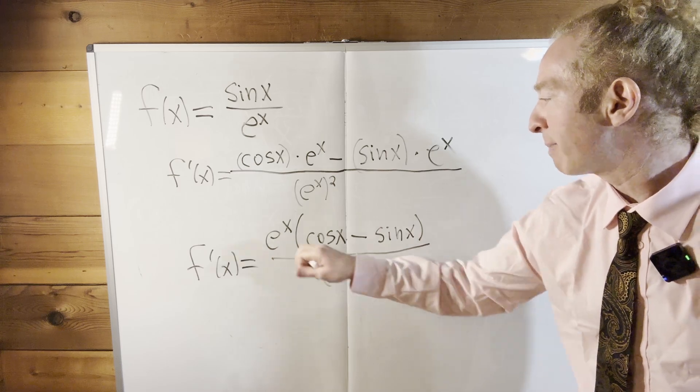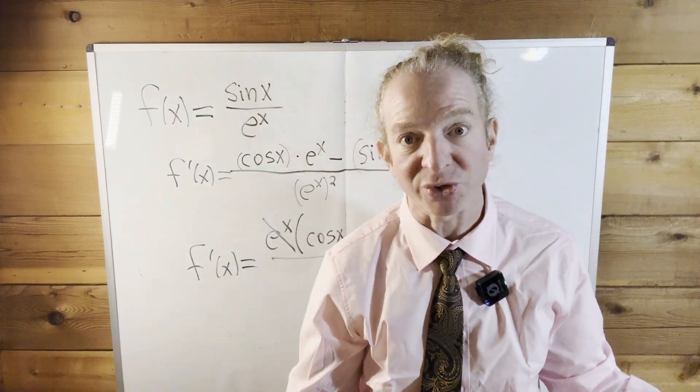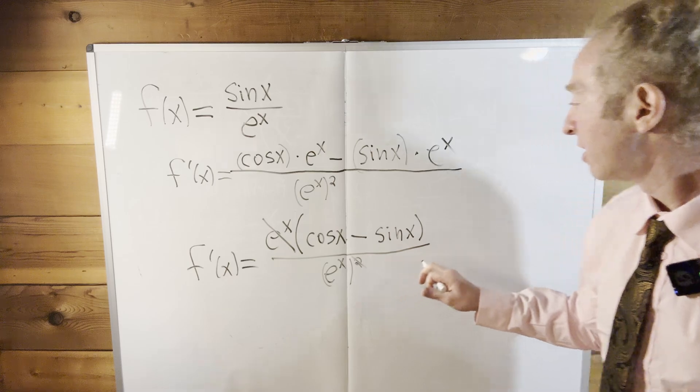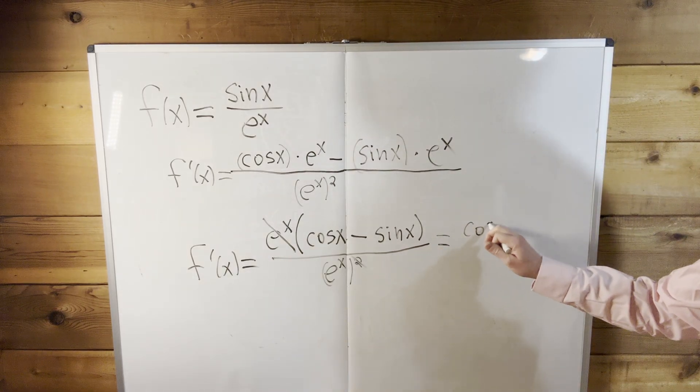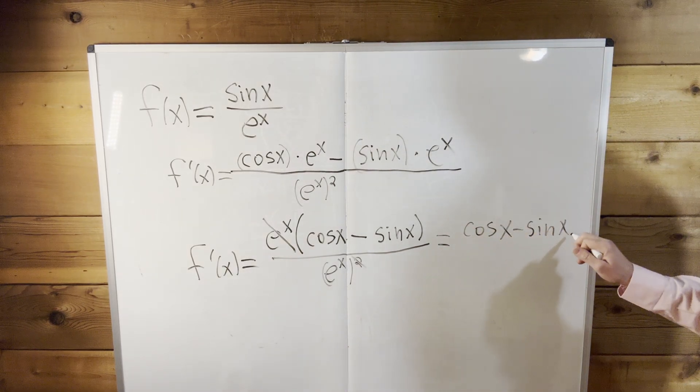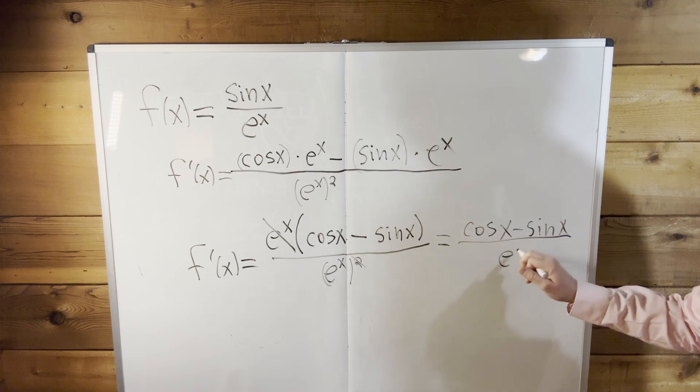e to the x quantity squared. And what happens here, we lose a copy. Boom! It just goes away, cancels, right? Beautiful, it cancels. So this is equal to cosine x minus sine x, all divided by e to the x.